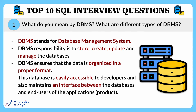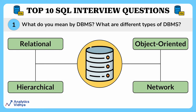Now let's look at the types of DBMS. First, we have a relational database, or RDBMS, where data is organized in two-dimensional tables using rows and columns. The next type is the object-oriented database, where information is represented in the form of objects used in object-oriented programming. Then we have the hierarchical database, where data elements have a one-to-many relationship. Finally, the network database management system is a system where data elements maintain one-to-many or many-to-many relationships.